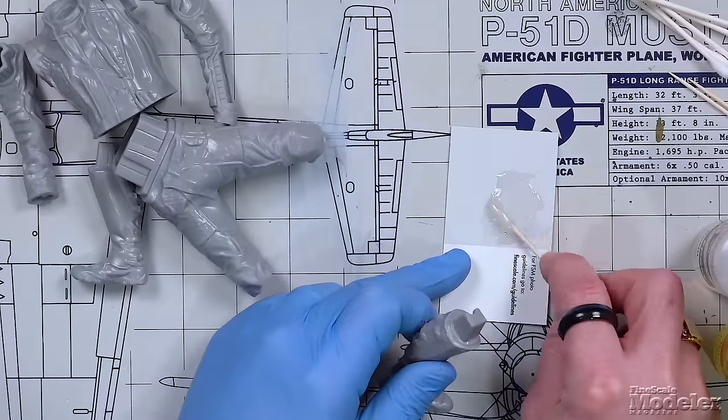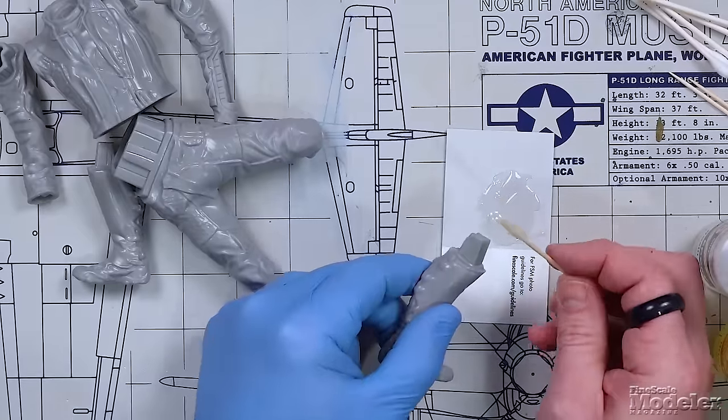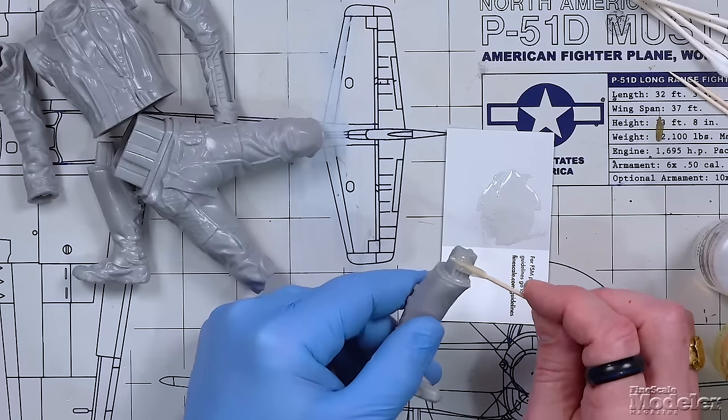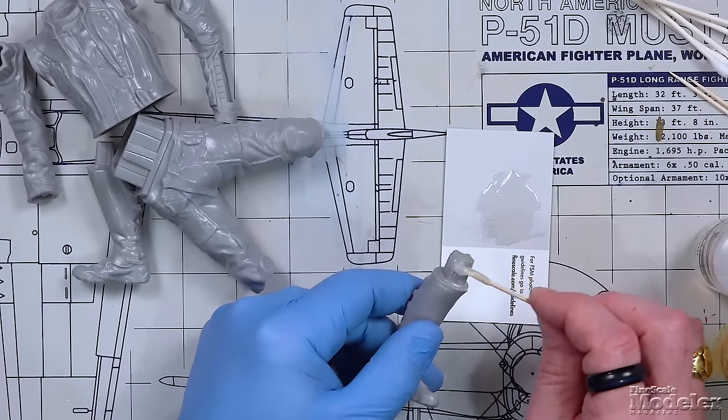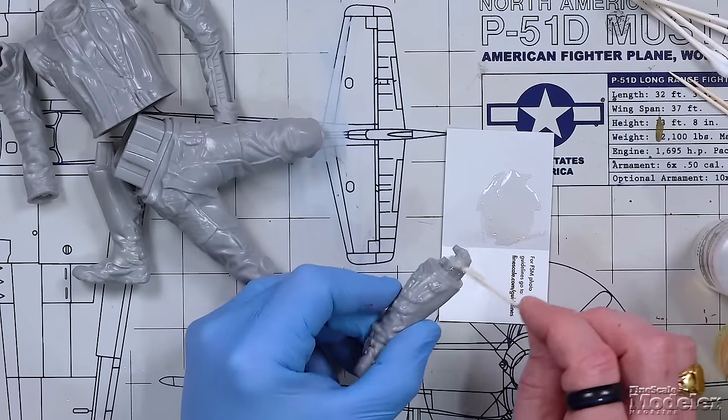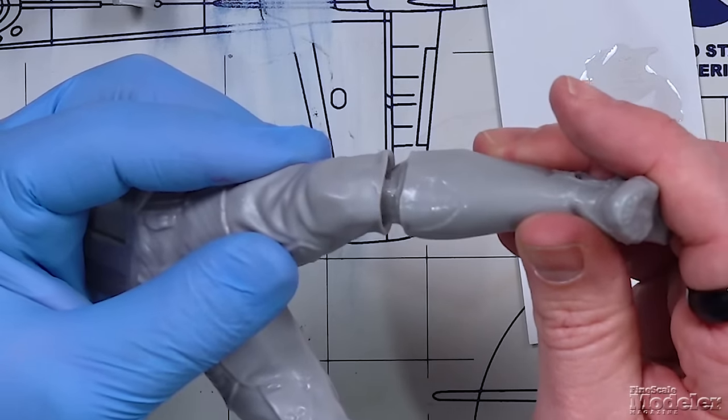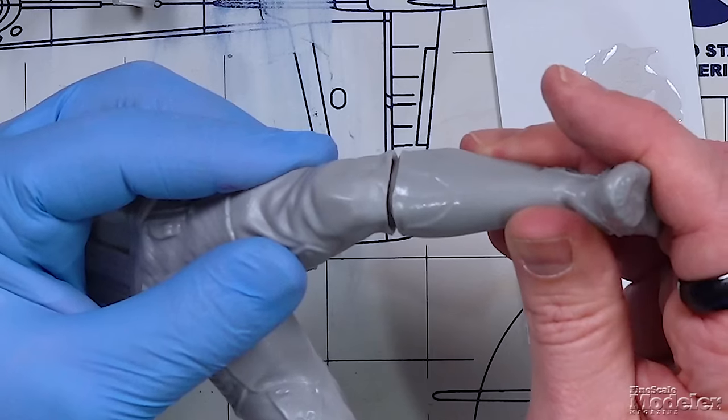So we already have some epoxy, two-part epoxy already made up. This is the five minute kind. I'm just going to apply it to this and then go ahead and put that in there.